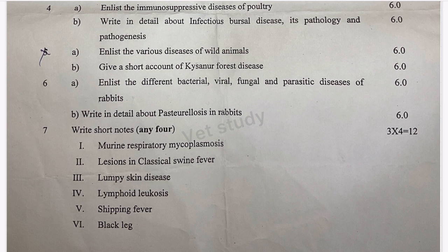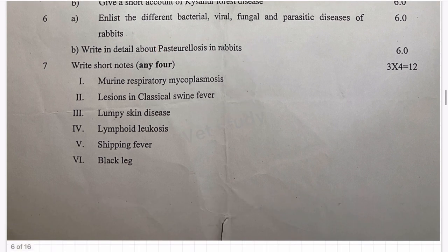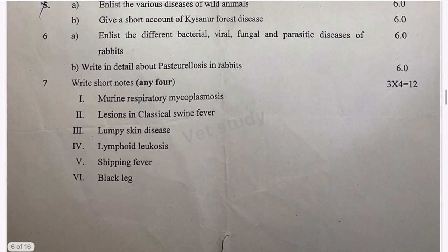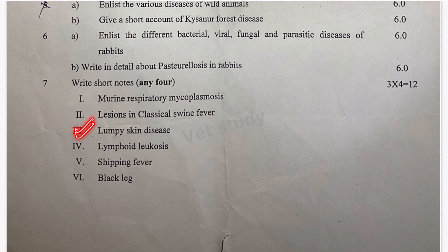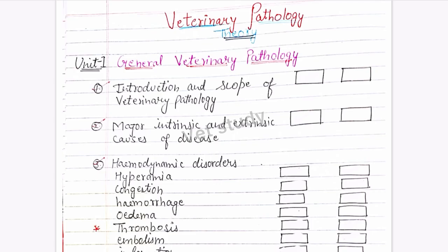The most important disease in rabbits is pasteurellosis. Also read bacterial, viral, and fungal diseases of rabbits. Other topics include Murine respiratory mycoplasmosis, Classical Swine Fever, Lumpy Skin Disease — a very burning topic — lymphoid leukosis, tripping fever, and blackleg.